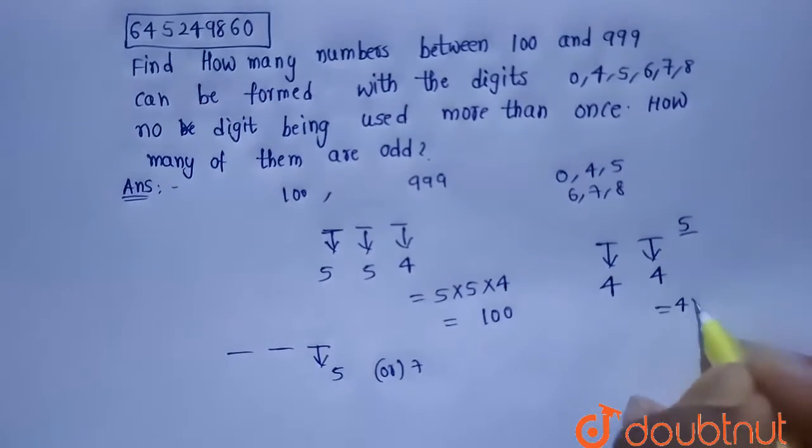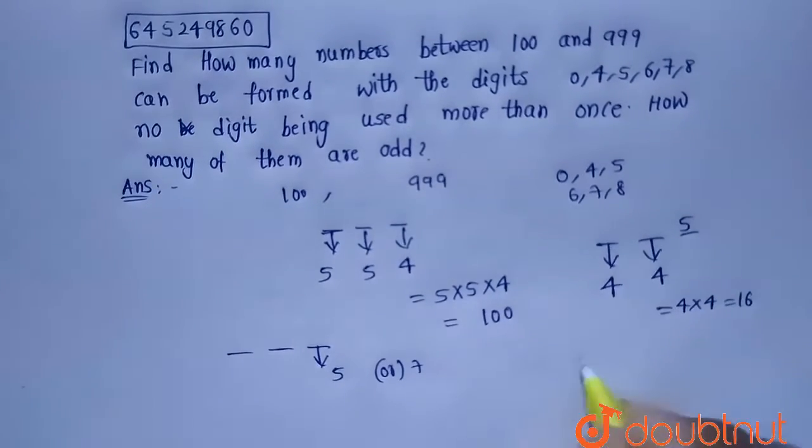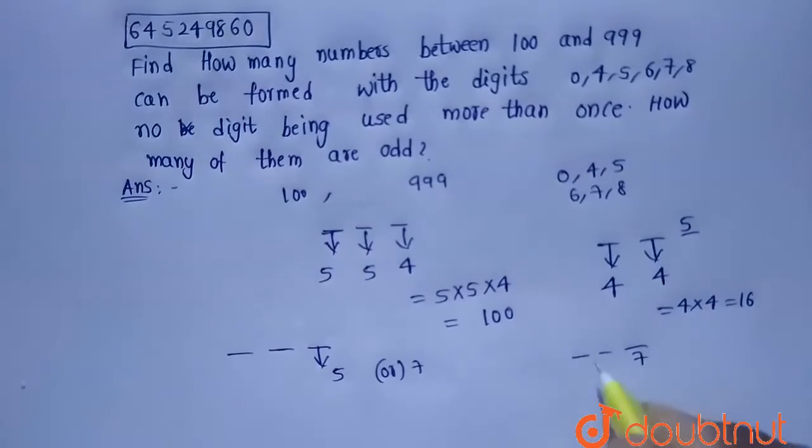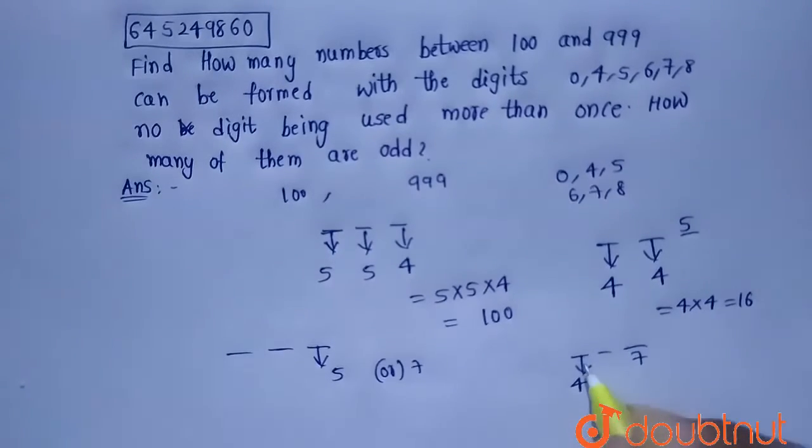And similarly, if there is a 7, it will have 4 chances because it cannot take 0 and 7. And this will have 4 chances because it cannot take the number which is present in this and 7. So that will be 4 × 4, 16.